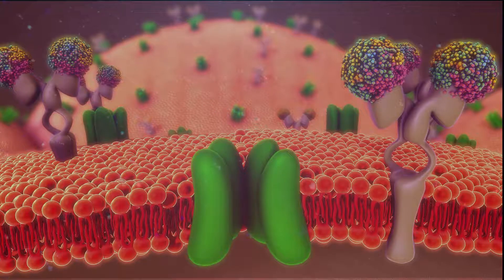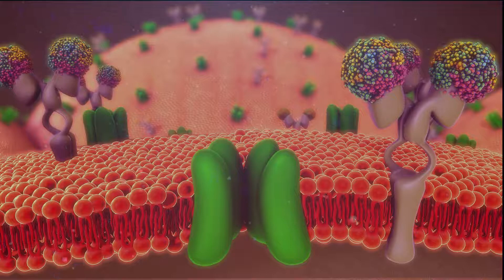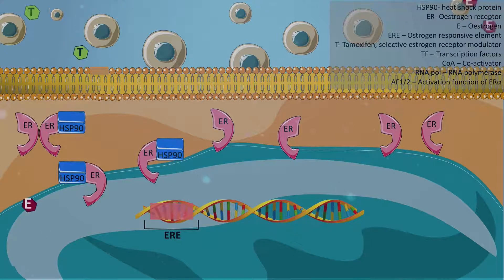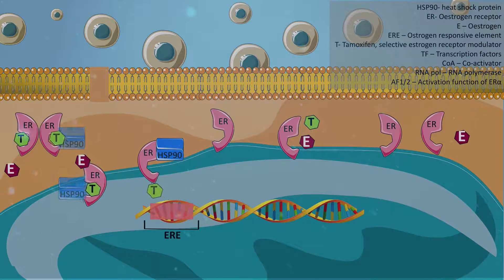Tamoxifen is a selective estrogen receptor modulator or SERM. It binds to the estrogen receptor either in the receptor bound form or in the cytoplasm. Tamoxifen competes with estrogen for the estrogen receptor.